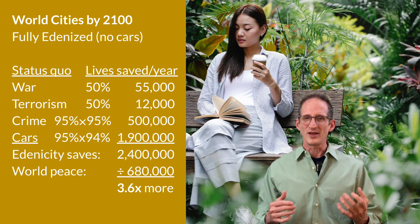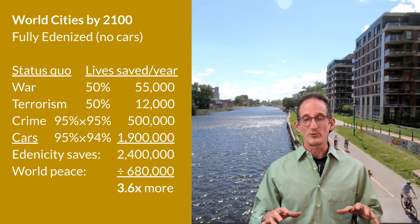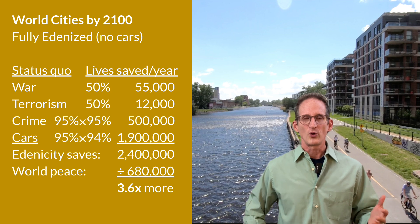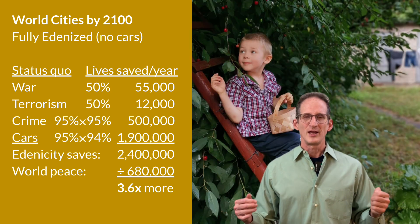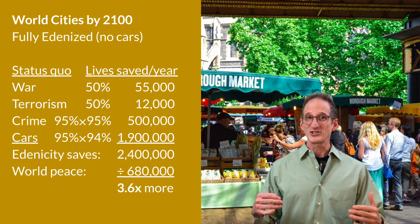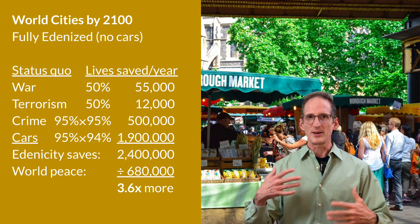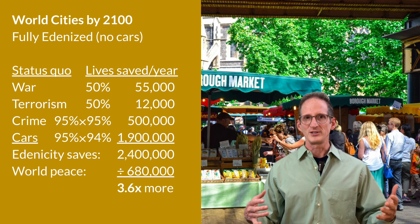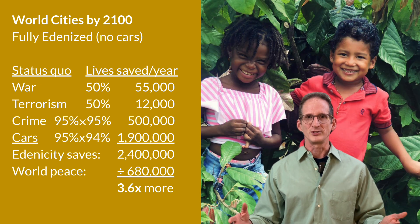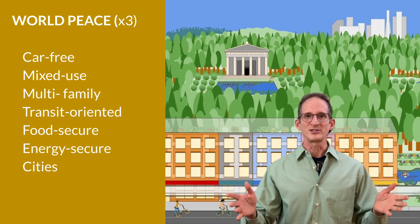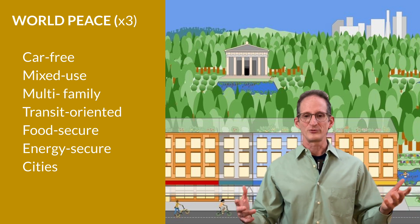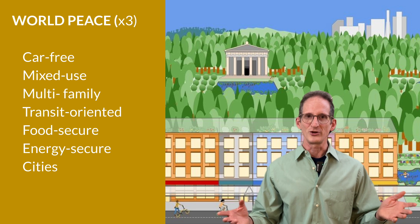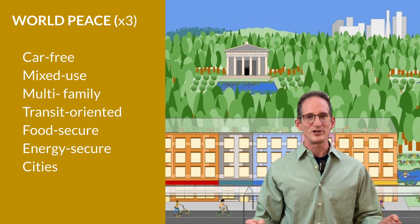And remember, this is not a life of sacrifice. It's a really great way to live where everything is close by and convenient, or you're living close to nature, living the traditional way, or some combination. Something like this will only succeed if people basically choose it — this is not something that gets crammed down people's throats. It's what happens if we make really good choices that make us happy. So the next time someone asks you to visualize world peace, imagine a car-free, mixed-use, multifamily, transit-oriented, food-and-energy-secure city. Imagine Edenicity. Take care. Stay green. See you next time.